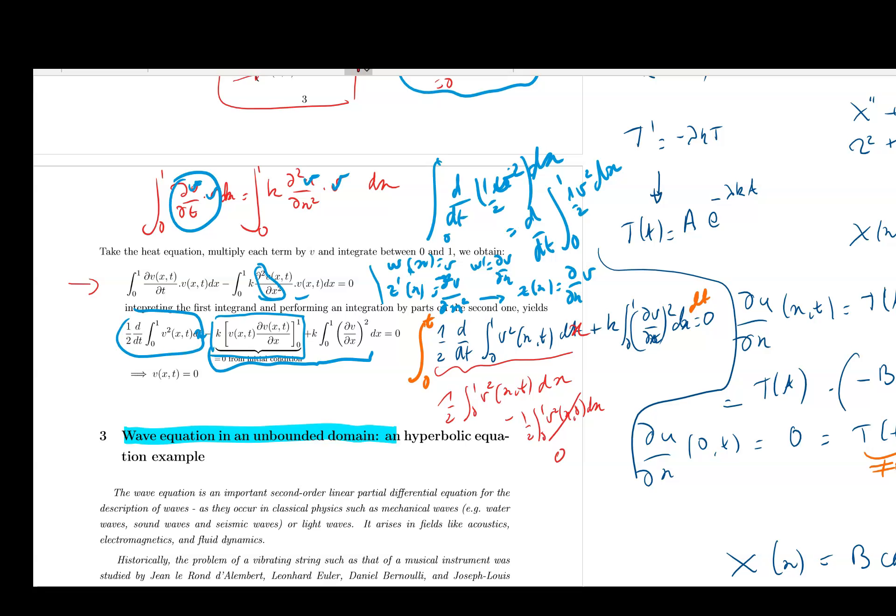And then I've got that part plus k integral between zero and T integral between zero and one dv² over dx² dx dt. Thing is that, and the whole stuff should be equal to zero. Thing is that that last part, this is going to be positive because this is a square. So it's positive. I'm doing the integral of a positive function. This is positive. And then I'm doing again the integral of a positive function. So that has to be positive.